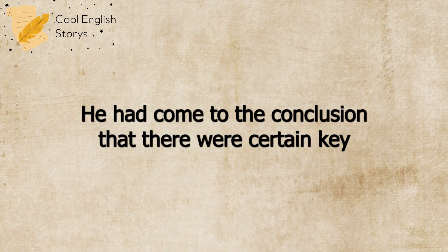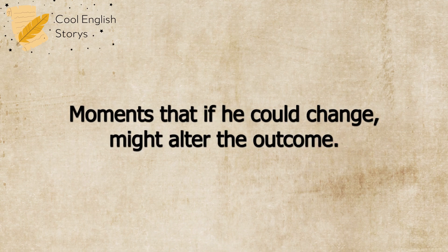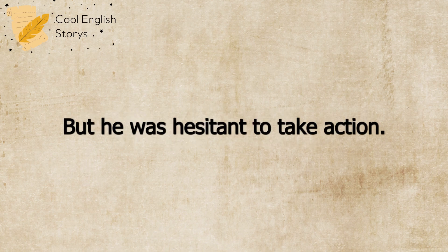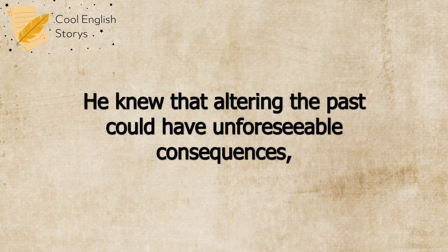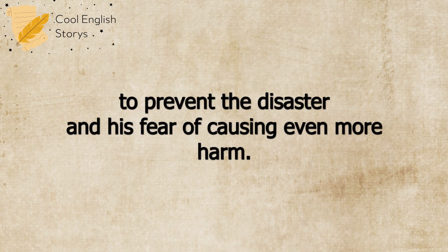He had come to the conclusion that there were certain key moments that had led to the disaster — moments that, if he could change, might alter the outcome. But he was hesitant to take action. He knew that altering the past could have unforeseeable consequences, and he didn't want to risk making things worse. He was torn between his desire to prevent the disaster and his fear of causing even more harm.